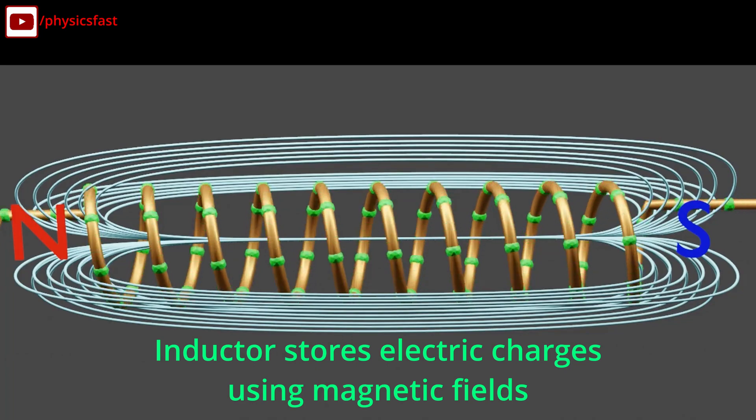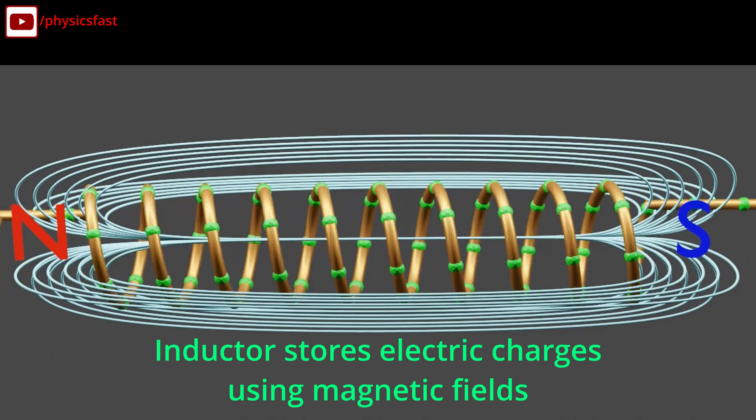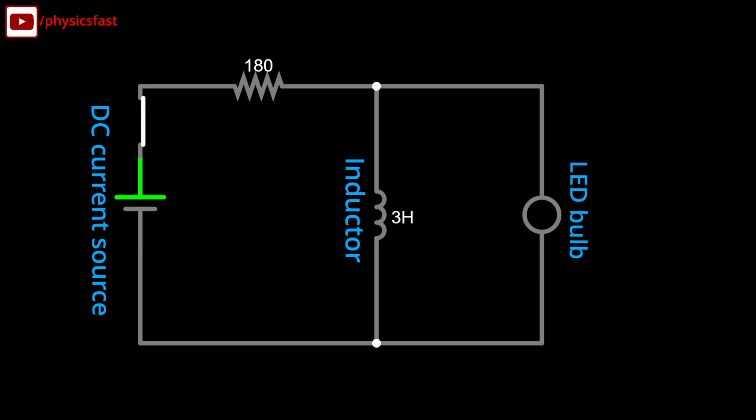Inductor also stores charges using a magnetic field. This circuit has an LED lamp connected to the battery. An inductor is connected in parallel to this battery and lamp.